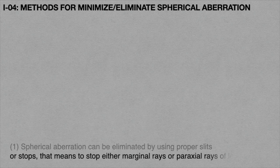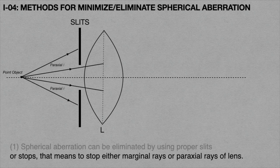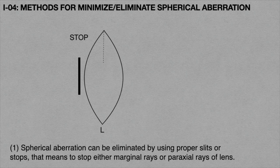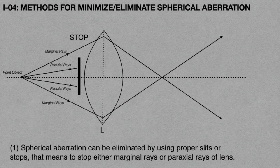The first method is that spherical aberration can be eliminated by using proper slits or stops — that means stopping either the marginal rays or the paraxial rays from reaching the lens. In this animation, if we place slits in front of the lens, then only paraxial rays are incident on the lens and refraction forms an image at point Ip. Similarly, if we place a stop in front of the lens, then only marginal rays are incident, and refraction forms an image at point Im.